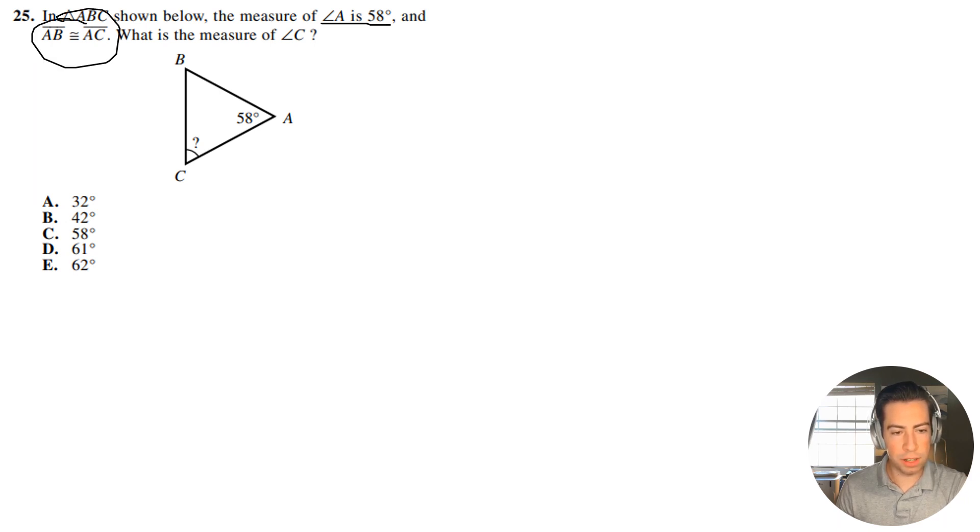Okay, so this is a really important piece of information here. If these two sides are congruent, it means that angle B and angle C, they have to be the same.